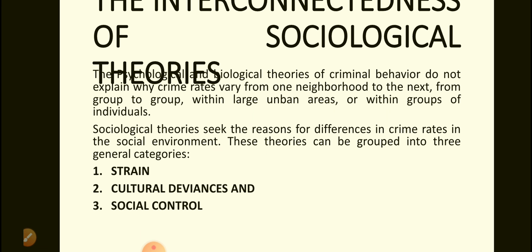The Interconnectedness of Sociological Theories. The psychological and biological theories of criminal behavior do not explain why crime rates vary from one neighbourhood to the next, from group to group, within large urban areas or within groups of individuals. Sociological theories seek the reasons for differences in crime rates in the social environment. These theories can be grouped into three general categories.